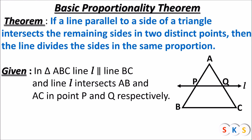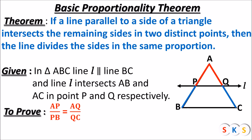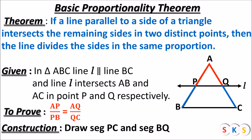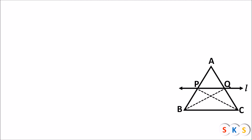So what is given: in triangle ABC, line L is parallel to BC, and line L intersects AB and AC at points P and Q respectively. What we have to prove is that line L divides AB and AC in the same proportion, meaning we have to prove that AP upon PB equals AQ upon QC. For construction, we will draw segment PC and segment BQ.